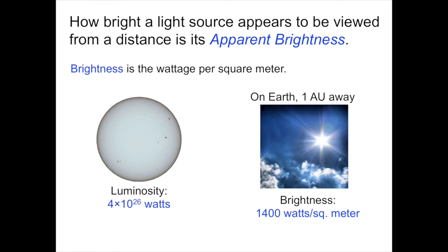So while the sun is producing 4 times 10 to the 26 watts every second of energy pouring off the sun, it goes off in all directions. But the Earth only catches a tiny fraction, and we drop from 400 trillion trillion to 1400 pretty quickly. The bottom line here is brightness depends upon distance.